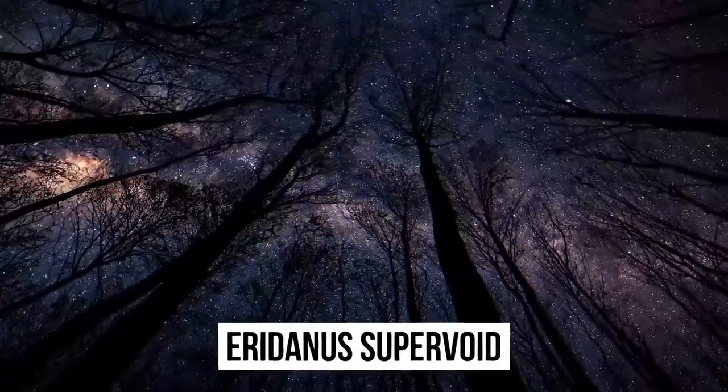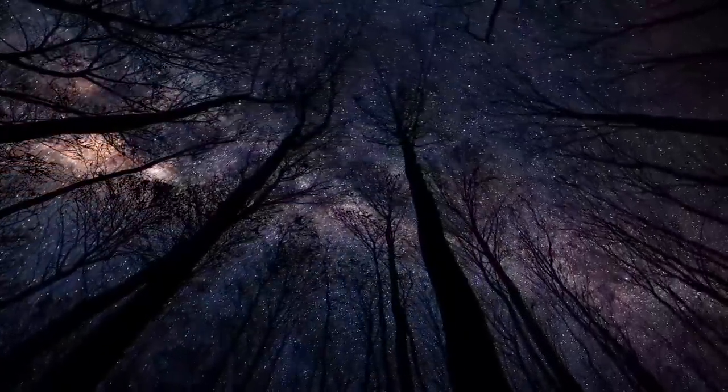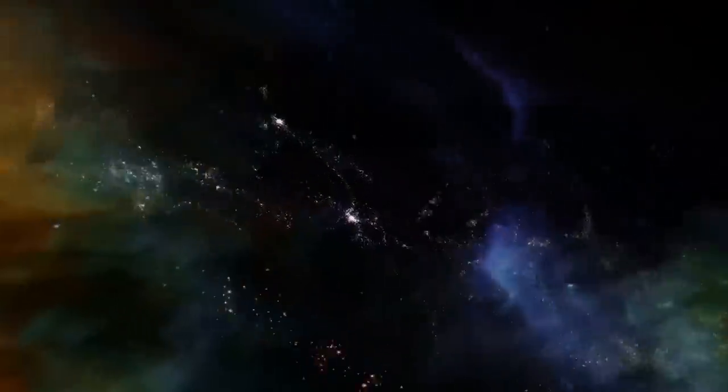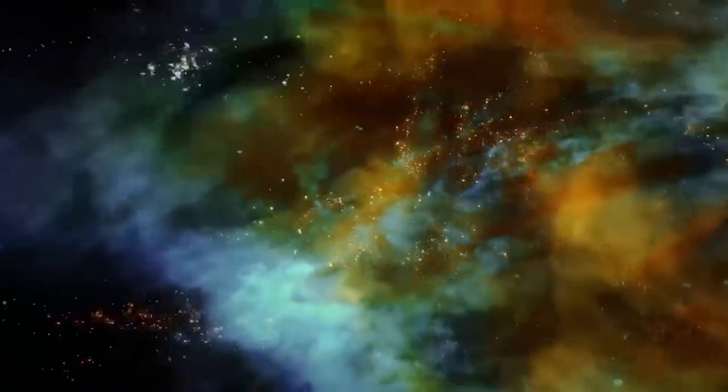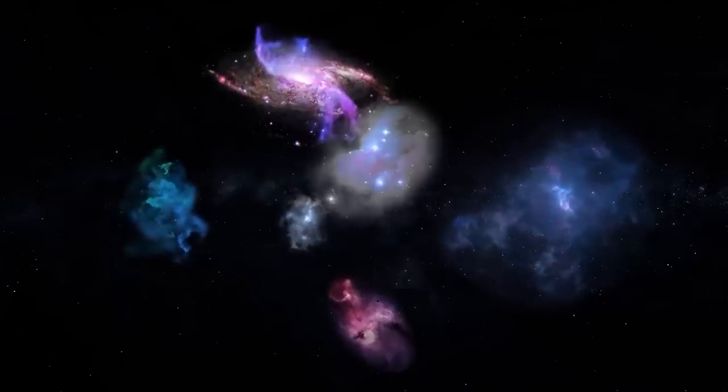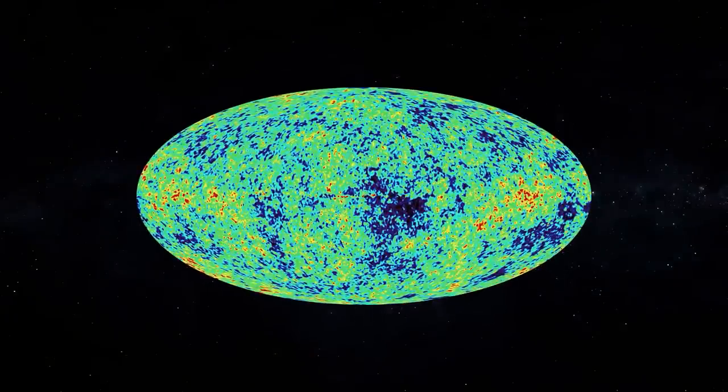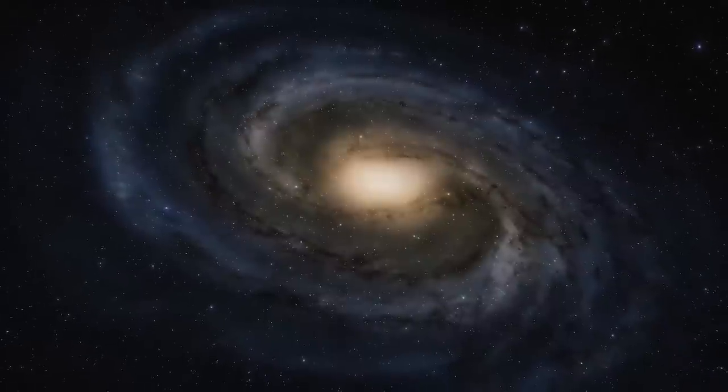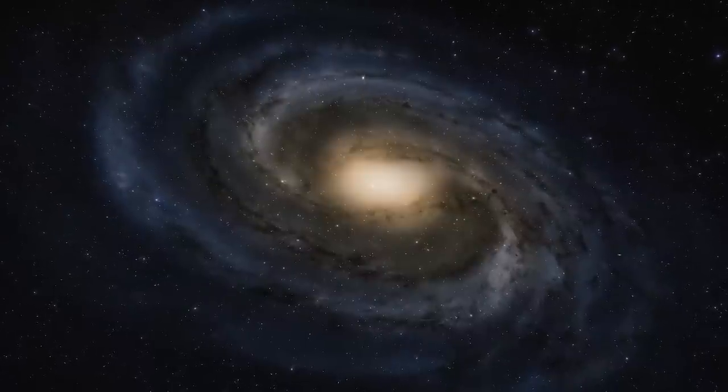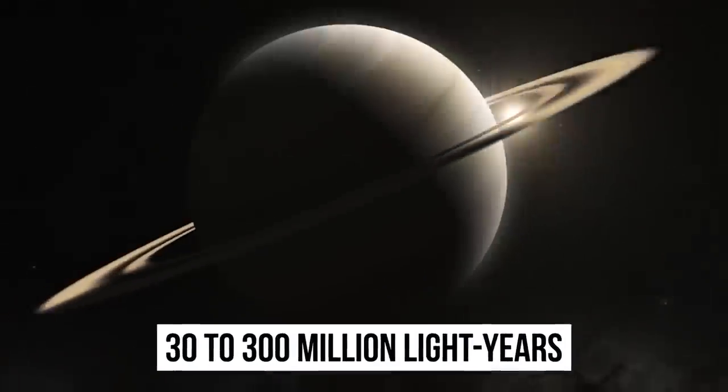Let's first of all look into what a void actually is. Also referred to as dark space, voids are large empty spaces that contain little or no galaxies and are present between filaments, which are the largest scale structures in the universe. They are generally defined as areas in the universe that lack normal matter, like dust, gas, or galaxies, and also contain less dark matter compared to galaxy clusters. Voids generally occupy a space of up to 30 to 300 million light years.